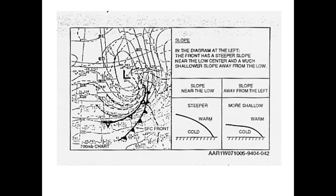When you have a cold front moving in, warm air is going to be lifted because it's less dense, and the colder air is more dense and stays close to the ground. The slope of the front is very important. With a steeper slope, you're going to have more vigorous lifting in the vertical of the air mass, especially if the atmosphere is unstable. If you have a more shallow frontal surface, the air is going to rise less vigorously, most likely producing more stratiform layer-like clouds and continuous precipitation.